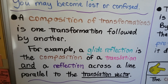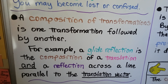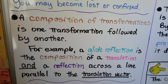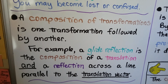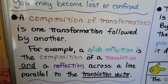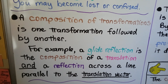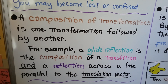A composition of transformations is one transformation followed by another. For example, a glide reflection is the composition of a translation and a reflection across the line parallel to the translation vector.